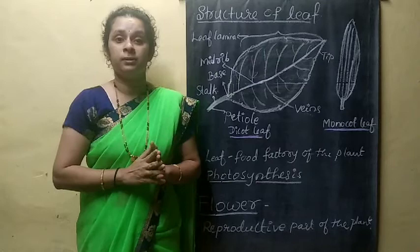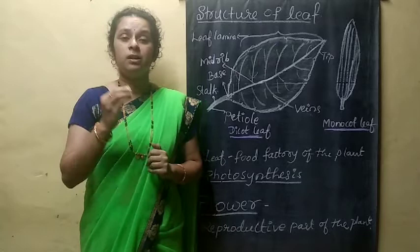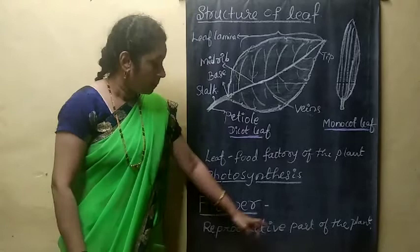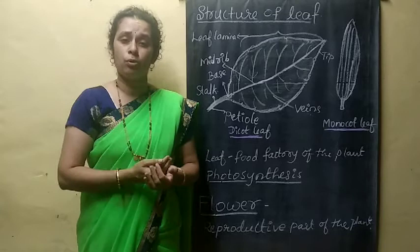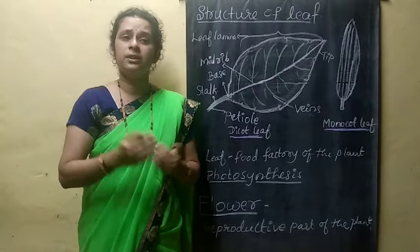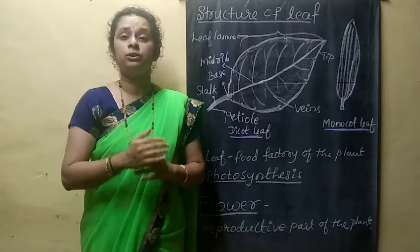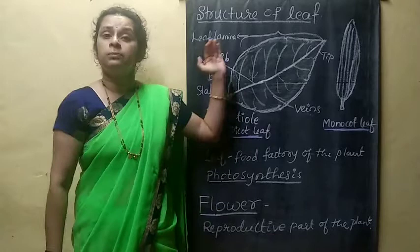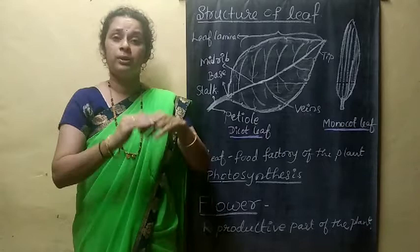Next we will discuss a very important part of the plant — the flower. It is a very attractive part as well as a reproductive part of the plant. You will come across different colored, very attractive flowers. We will consider the hibiscus flower as a typical model flower to study, because you can observe all the parts in it. We will dissect the flower, take it out, and see the parts of the flower.